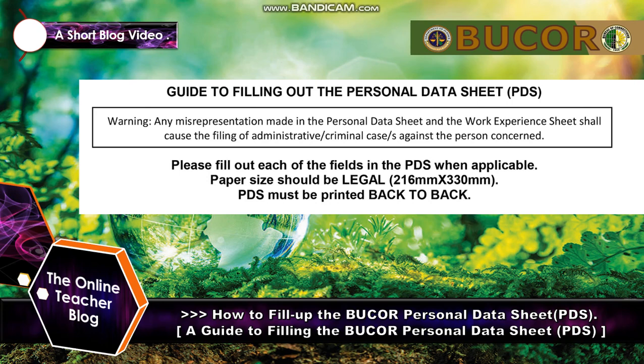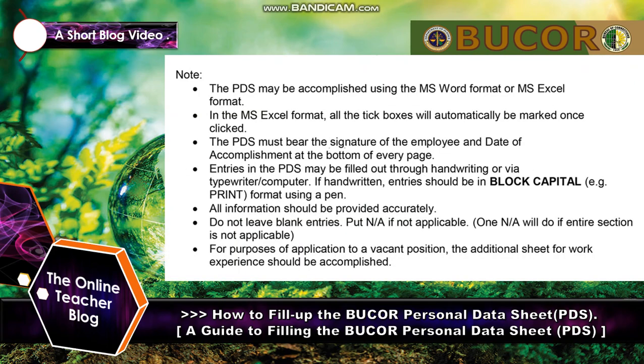Fill out each of the fields in the PDS when applicable. Paper size should be legal — 216 mm by 330 mm. The PDS must be printed back to back. The PDS may be accomplished using MS Word or MS Excel format. In MS Excel format, all tick boxes will automatically be marked once clicked. The PDS must bear the signature of the employee and date of accomplishment at the bottom of every page.